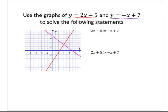Graphically, we see that they are equal — the y values are equal at the point of intersection. Notice that they intersect at the point (4, 3). So the solution of the equation is x equals 4. The y values are the same, 3, when the x value is 4.